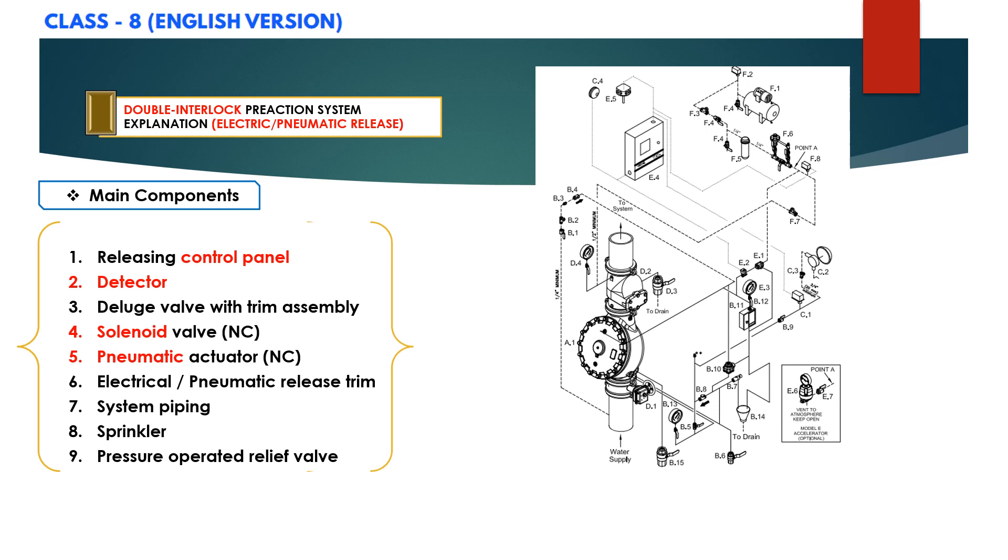Both the electric detection system must activate and supervisory pressure must be relieved from the sprinkler system before the preaction deluge valve will open to fill the sprinkler system with water.